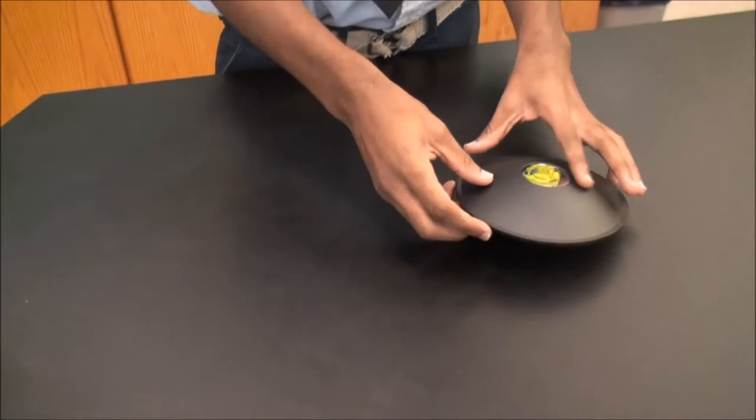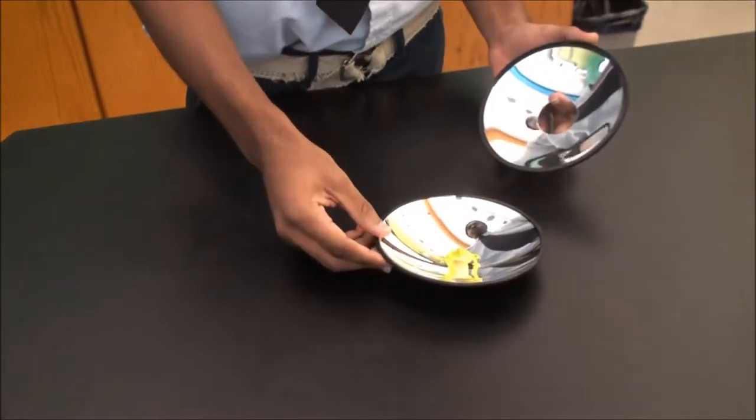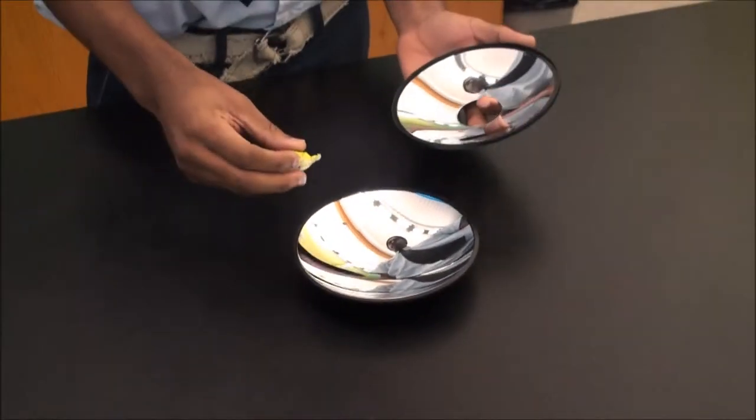So materials are a 3D mirror scope, a small object. Make sure it's not metal because it can't scratch the two mirrors here.